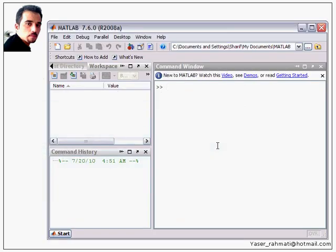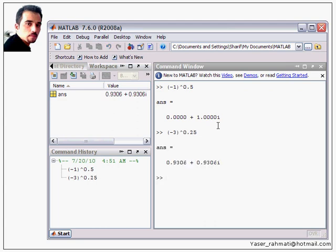Let's show you that operation in MATLAB environment. Minus 1 to the power of 0.5 is just i. And minus 3 to the power of 0.25 is equal this one. This is the answer of that operation.